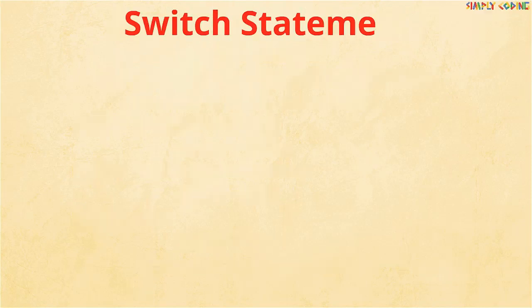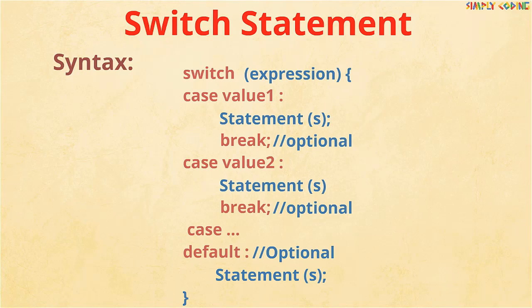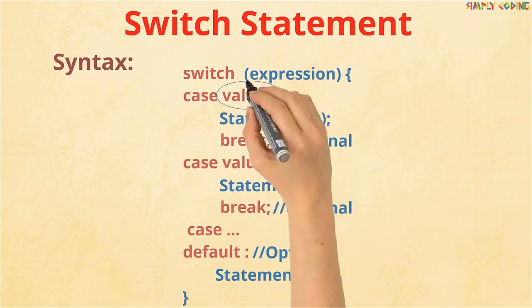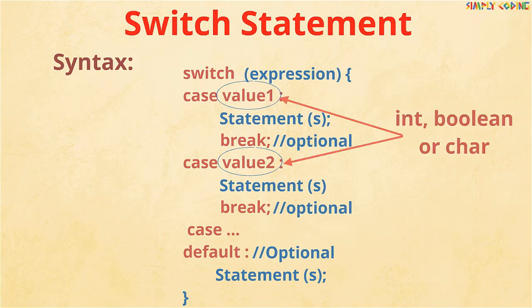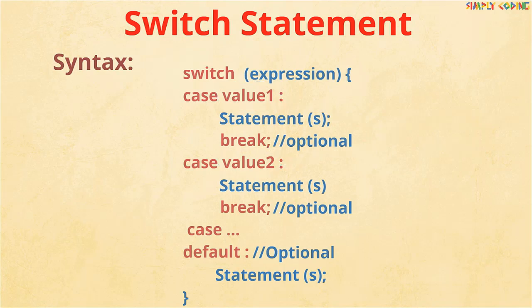That's where the switch statement comes in — it is a multi-way branch selection statement. The switch expression must be either an integer or char primitive data type. You cannot specify a range like in if; it has to be an exact match. It has multiple case literals against which the value of the switch expression is compared. If a match is found, that case section is executed; if no match is found, the default case is executed.